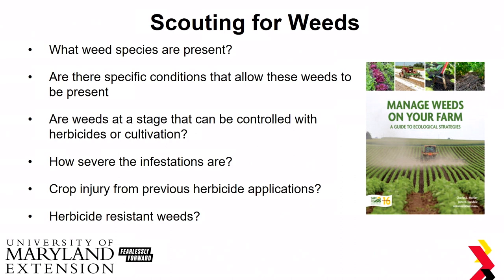Once you know which weeds you have and the history of your field, scouting for weeds is a good tactic. It lets you know what specific weeds are present and whether any specific conditions allow those weeds to thrive. I recommend the book Manage Weeds on Your Farm: A Guide to Ecological Strategies, which is free as a PDF from the SARE website — it has good information about individual weed species and non-chemical control tactics. Also consider previous herbicide applications and whether you'd see any injury from current or future applications.